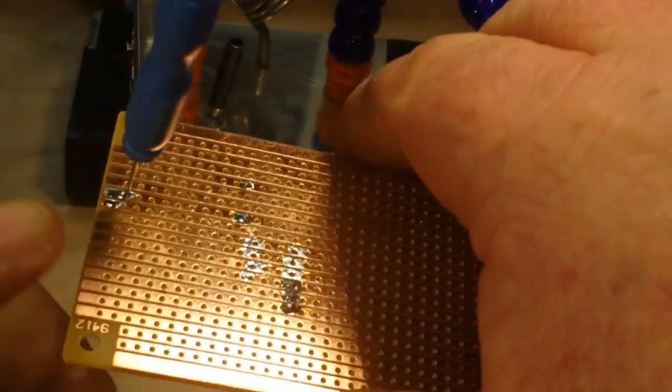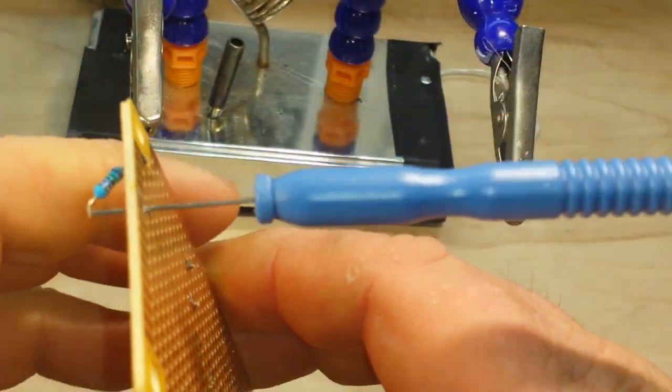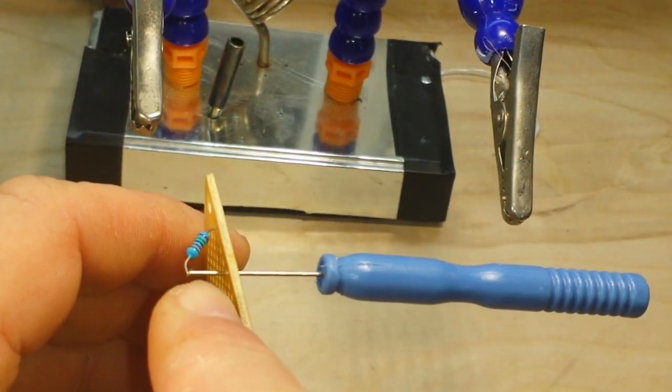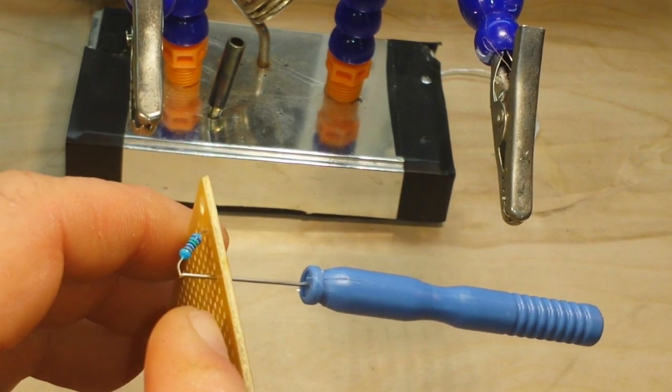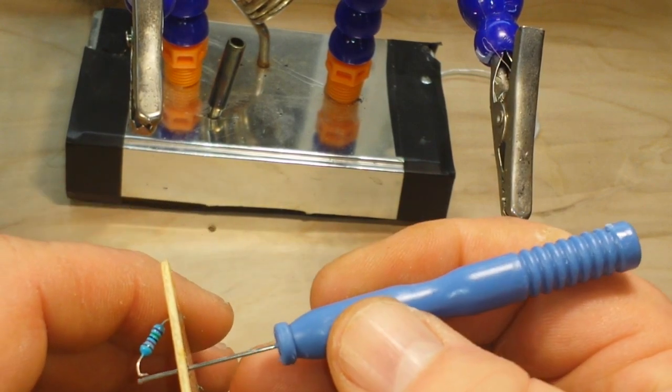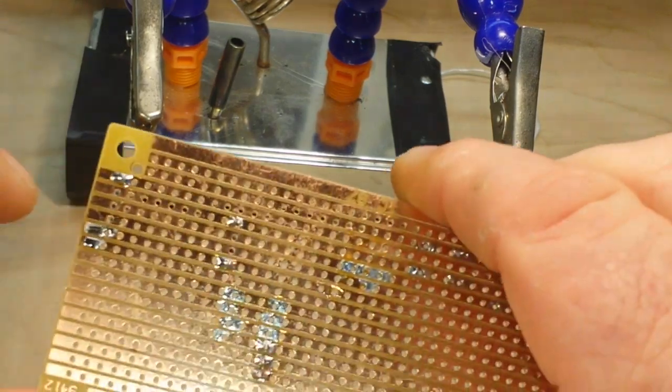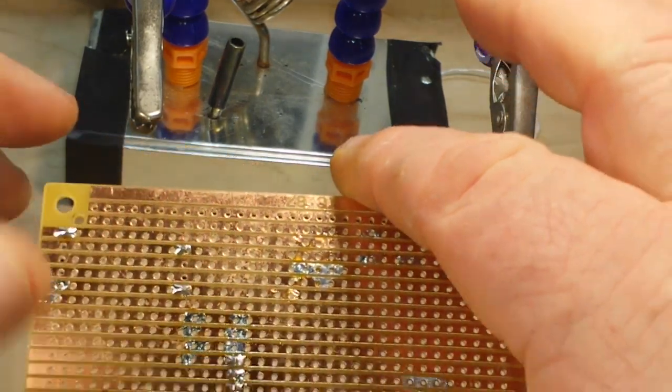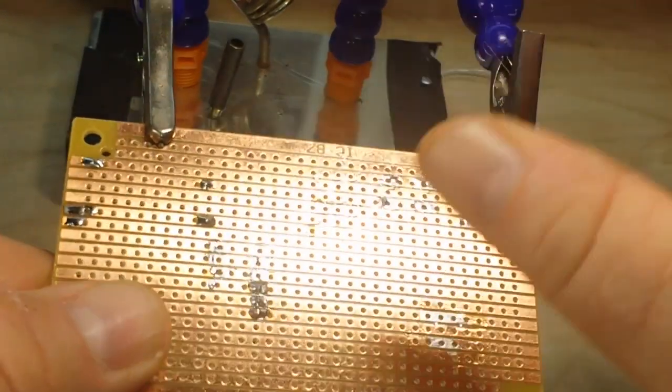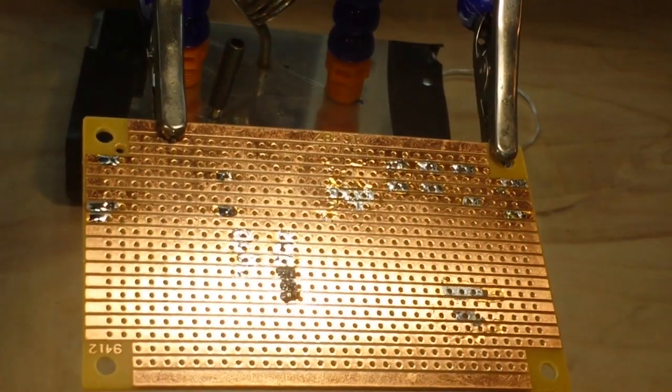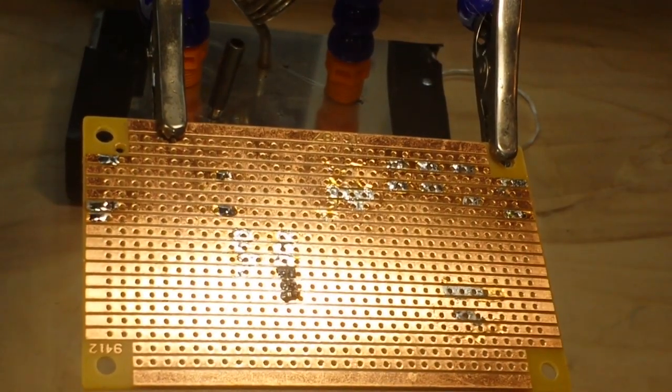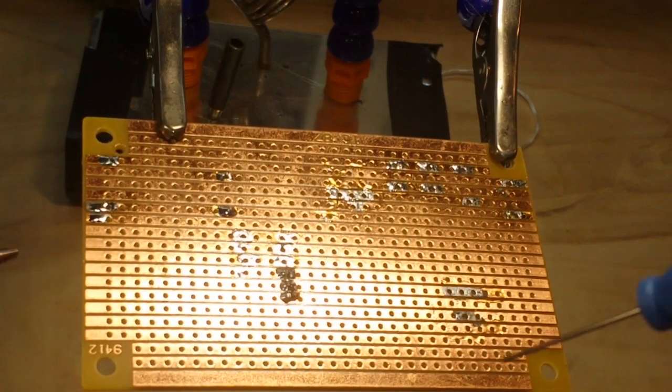Now when I turn this over, you can see the hollow needle has encased the leg of the resistor and we can pull it back out. And you see that that hole is open. Now we do it again for the other side.